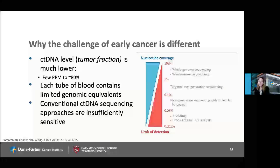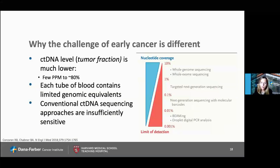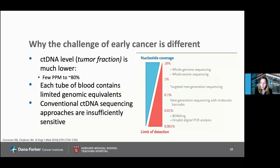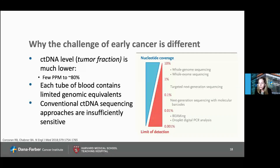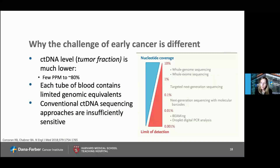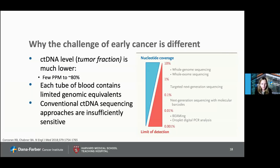The challenge of ctDNA assessment in early breast cancer comes down to the fact that ctDNA levels — or the tumor fraction — are much lower than in advanced cancer. It ranges from a few parts per million in early disease, up to around 80% of cell-free DNA coming from the tumor in advanced cancer. Tests used in the advanced cancer setting are not nearly sensitive enough to detect levels in early breast cancer. Each tube of blood contains limited genomic equivalents because the ctDNA level is so low, making conventional ctDNA sequencing insufficiently sensitive.